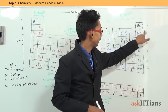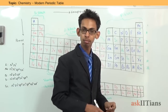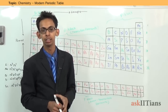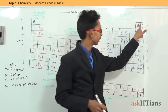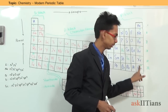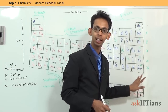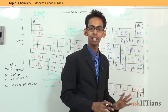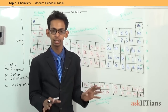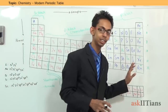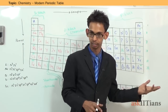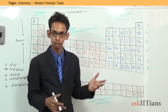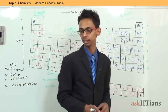Group 18 is the last group. These are known as noble gases or inert gases. This is because they have a fully stable electronic configuration — all orbitals are completely filled — and therefore they do not participate in any reaction. They are found in the gaseous state, so they are called noble gases or inert gases.